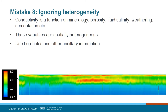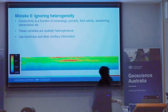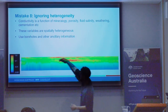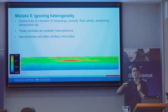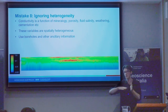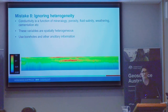Ignoring heterogeneity is probably half the challenge of AEM. The conductivity of a volume is a function of the mineralogy of the formation, porosity, salinity of the fluid, weathering, and segmentation — and these all vary in space. Just because something is a conductor here doesn't mean it's a conductor there. If you're trying to interpret something between lines and hoping what is a conductor here you can pick up there, you don't know what's changed in the meantime. If you have other data sets that can tell you how to interpret these things, you're much less likely to fall into these traps.